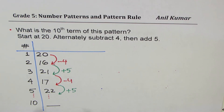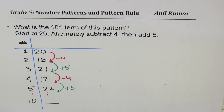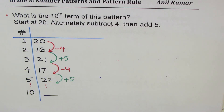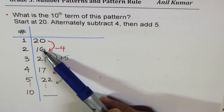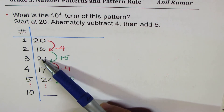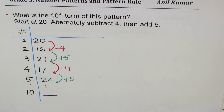Write down your answer. I've only given the first five terms — you have to get the rest and explain how you got the 10th term. You could also notice that the odd-position terms go 20, 21, 22, and the even-position terms go 16, 17 — that pattern can also help you find the answer.